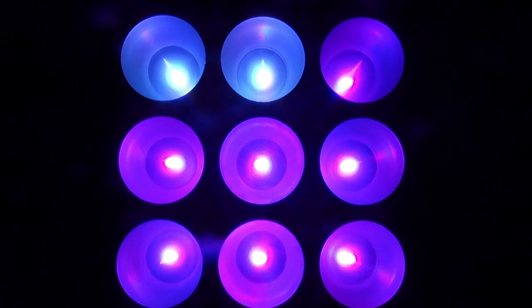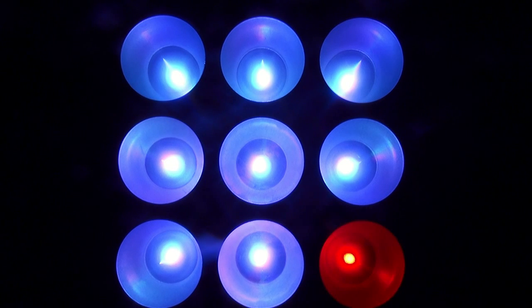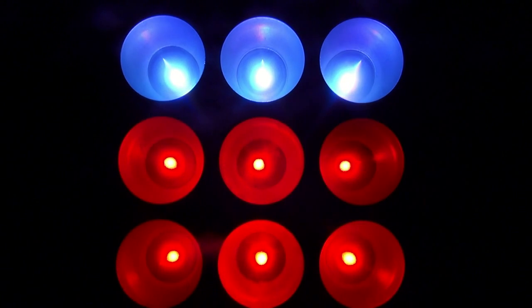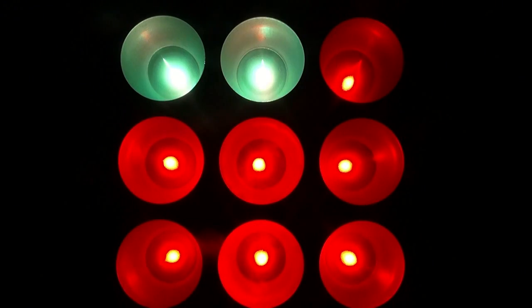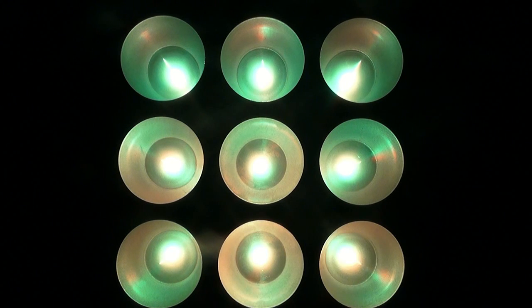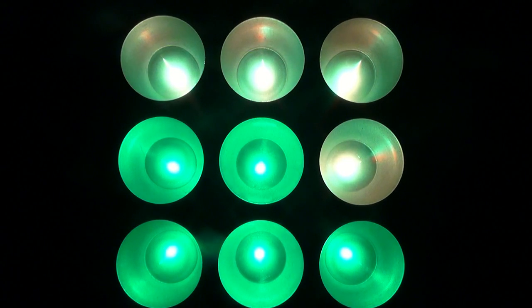Now obviously, the UV COB Cannon is going to do UV, but something like this, the Dots Brick 3.3 does several colors. Remember when I said each little dot on the COB is kind of like the pixel on a television set?